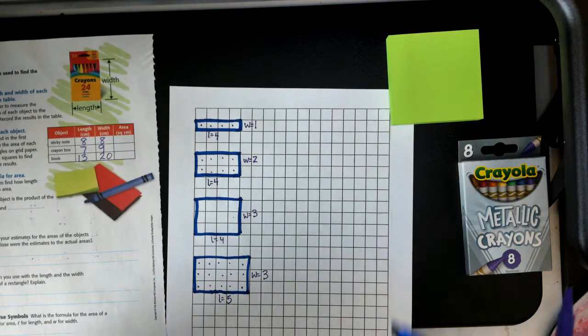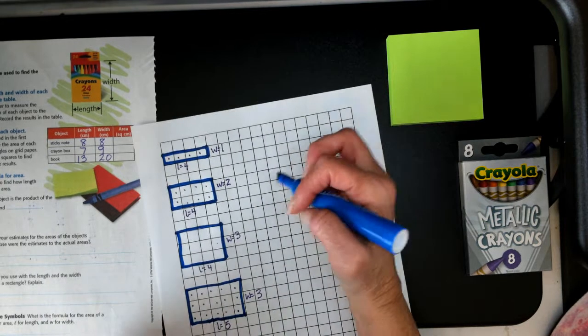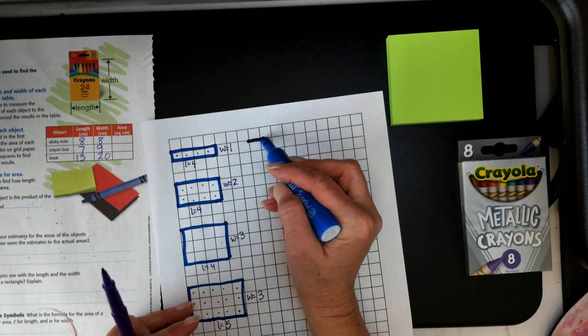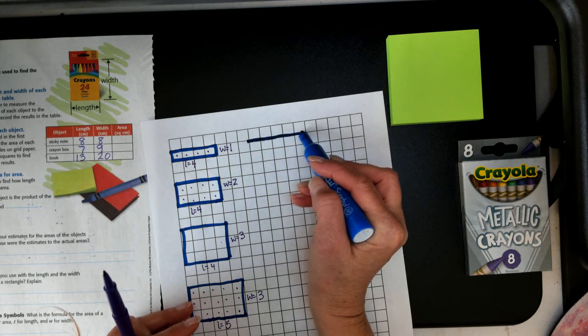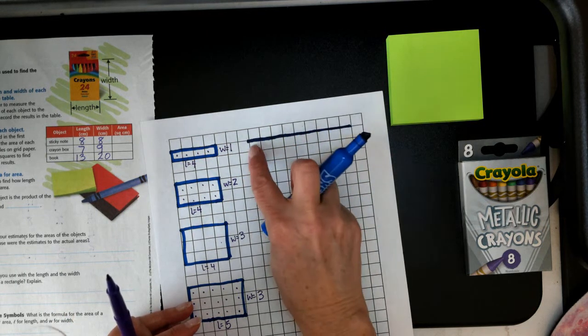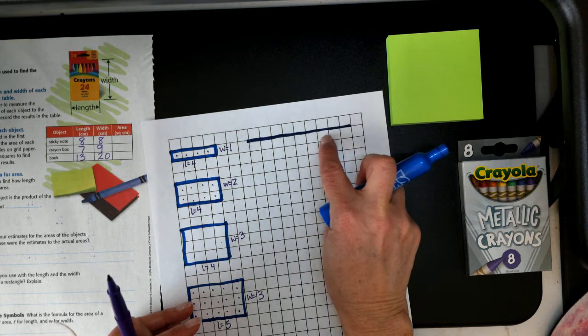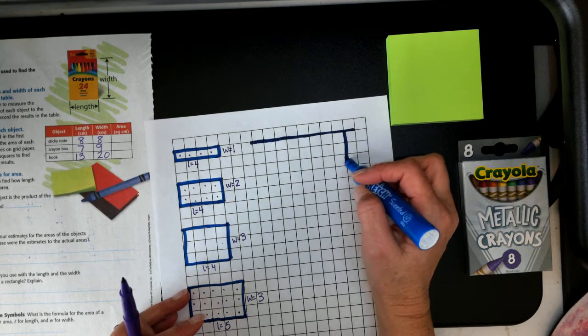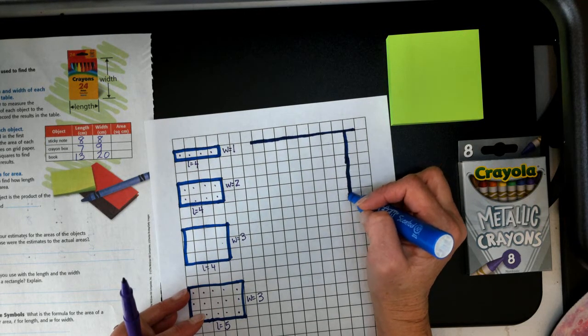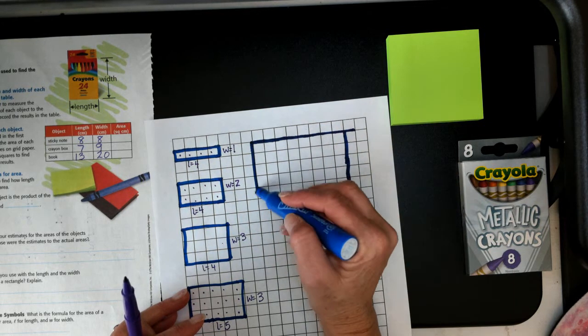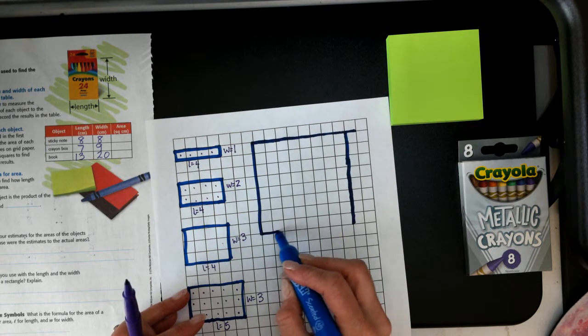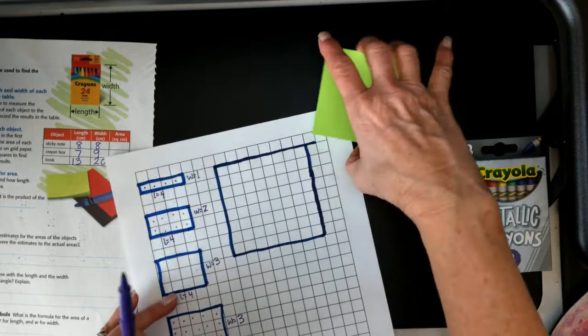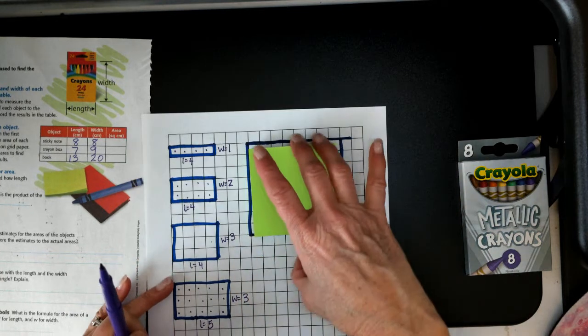I'm going to take my sticky note, and I will do eight going across. One, two, three, four, five, six, seven, eight. And I'm going to go down eight. One, two, three, four, five, six, seven, eight. And close that up. This is my sticky note. It's eight by eight. It's pretty close if I put it in there.